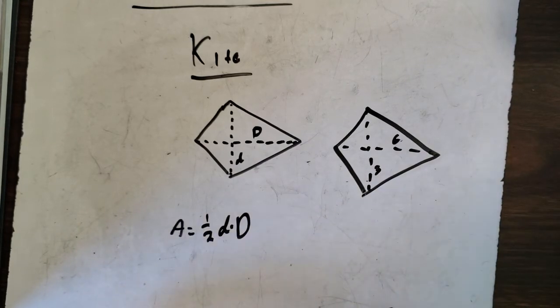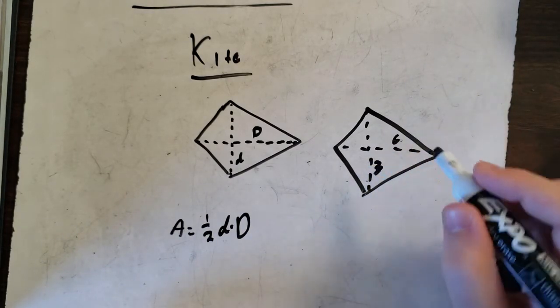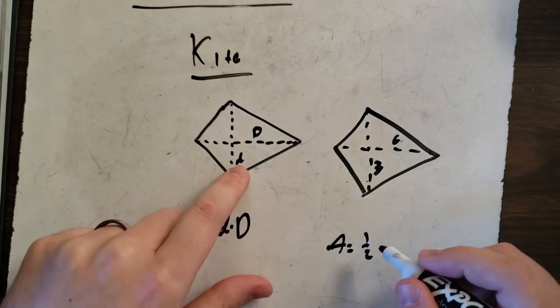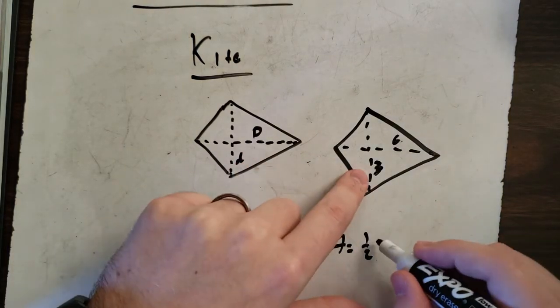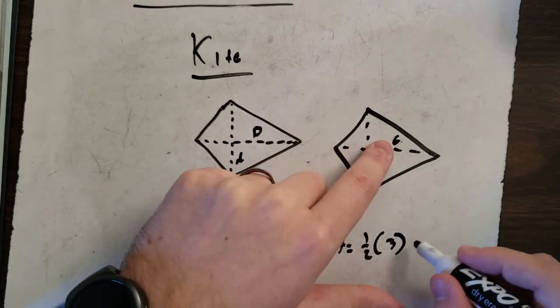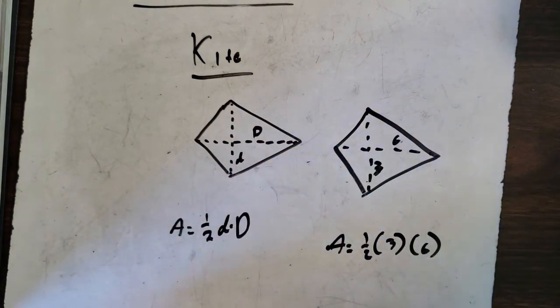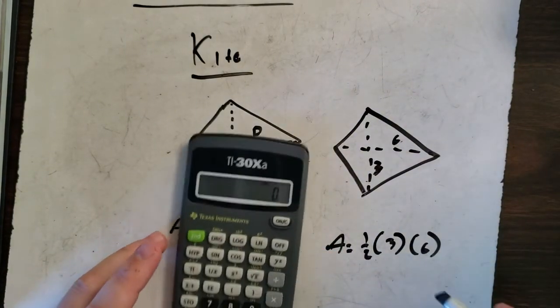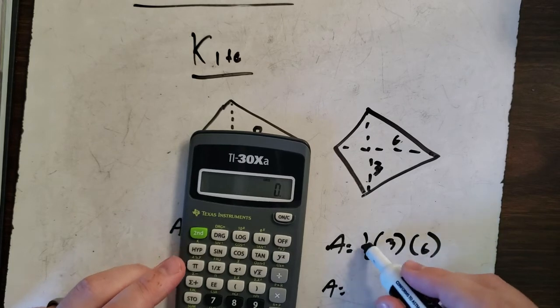Well, plug in the formula. Area equals 1 half times the small d, which is 3, times the capital D, which is 6. And solve. You want to use a calculator? That's fine.